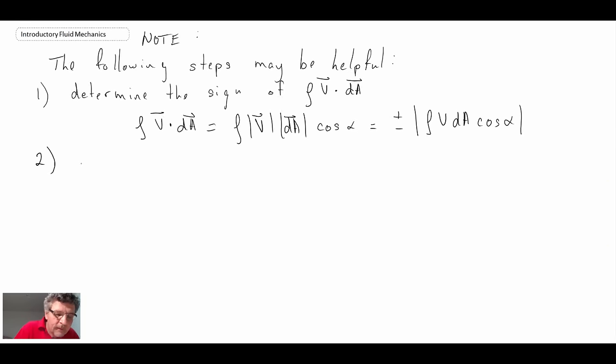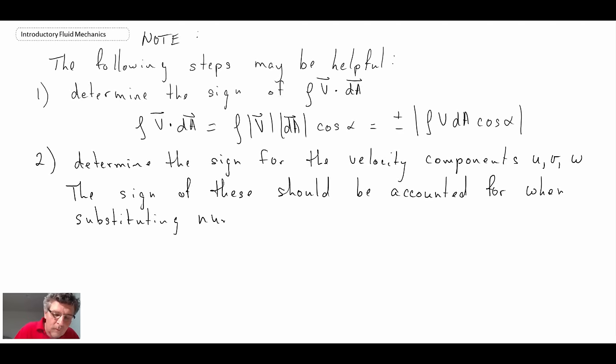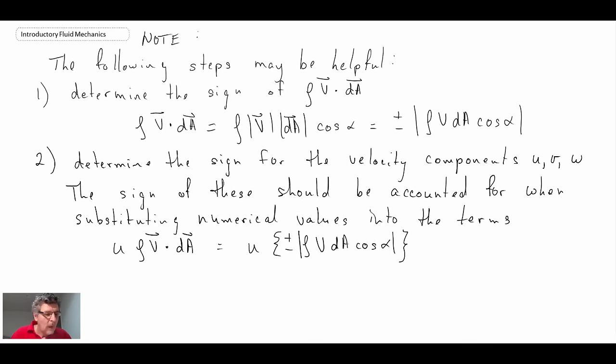And the second thing to note is be careful about the signs of u, v, w as well. So essentially what I usually do when I solve these problems, first of all, I look at the mass flow rate, which is crossing the boundary. And I determine the sign of this term.